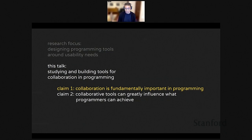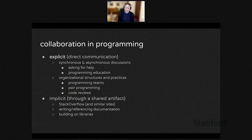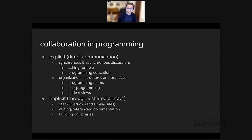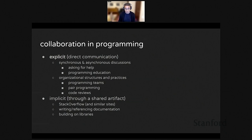I'll start by making two claims to convince you that programming is a socio-technical problem. First, collaboration is fundamentally important in programming. There are two main kinds: explicit and implicit. Explicit collaboration includes synchronous and asynchronous discussions, pair programming, code reviews, and working as part of a team. Beyond that, there's implicit collaboration — communication through a shared artifact — where the vast majority of Stack Overflow usage is people learning from each other's questions and answers rather than asking directly. Referencing documentation or using a library written by someone else also falls under implicit collaboration.